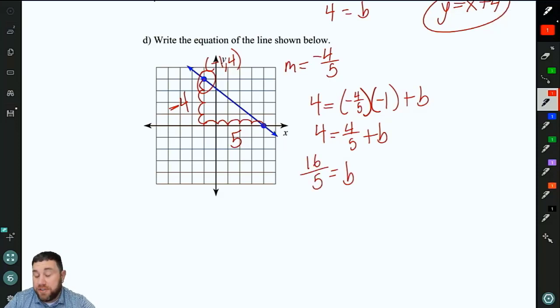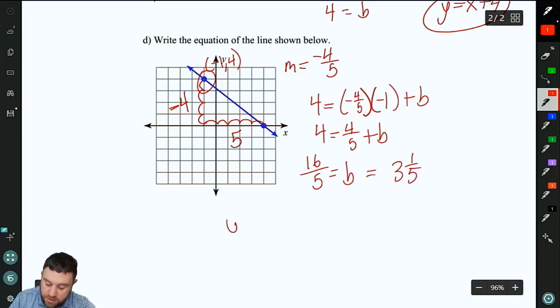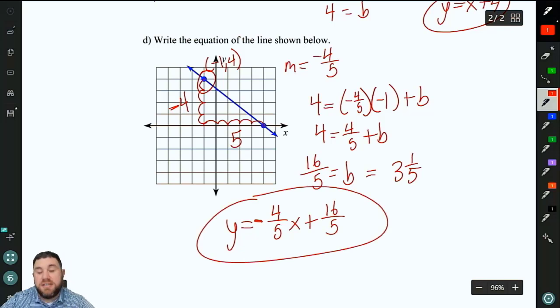If you wanted, I prefer to leave them as improper fractions. If you wanted to, you could say 3 and 1 fifth. That would be fine. So y equals negative 4 fifths x. And when we write this, we want that negative to be out front, okay, plus 16 fifths. So that's the equation for our last line.